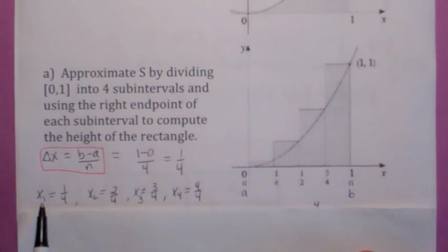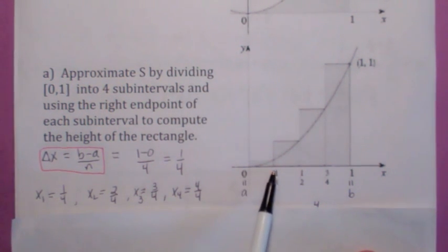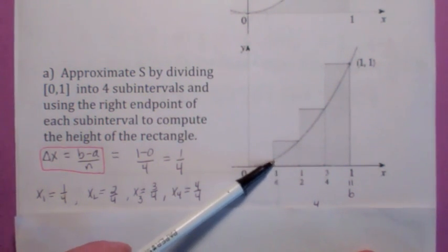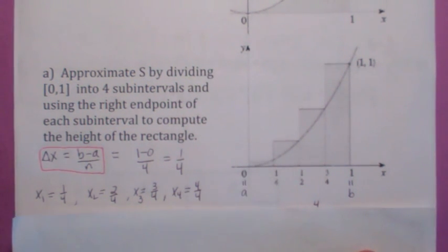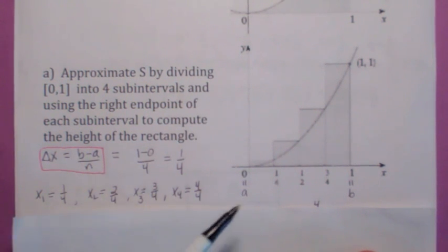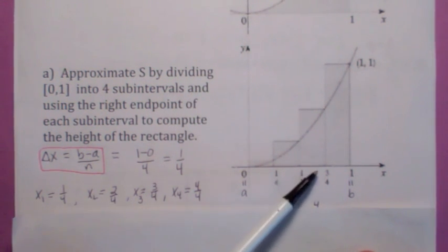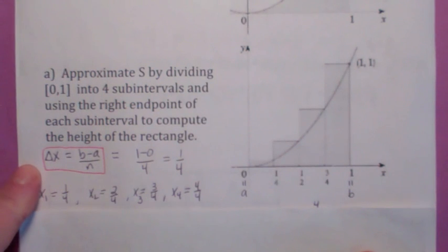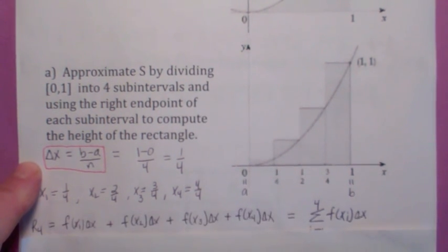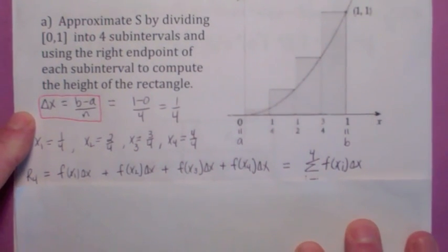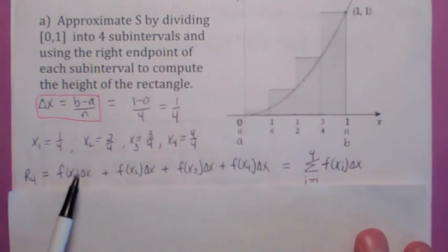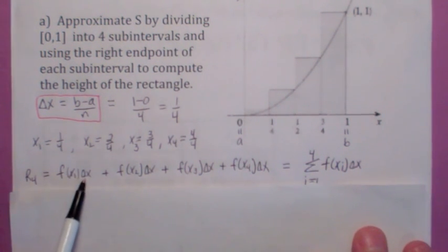If you use the right endpoint, then for the first subinterval we're going to plug in 1 fourth into x squared, and this height would be f of 1 fourth, which would be 1 fourth squared. The right endpoint of the second subinterval would be 1 half or 2 fourths, and so on. The area of each rectangle is f of the right endpoint times the width.